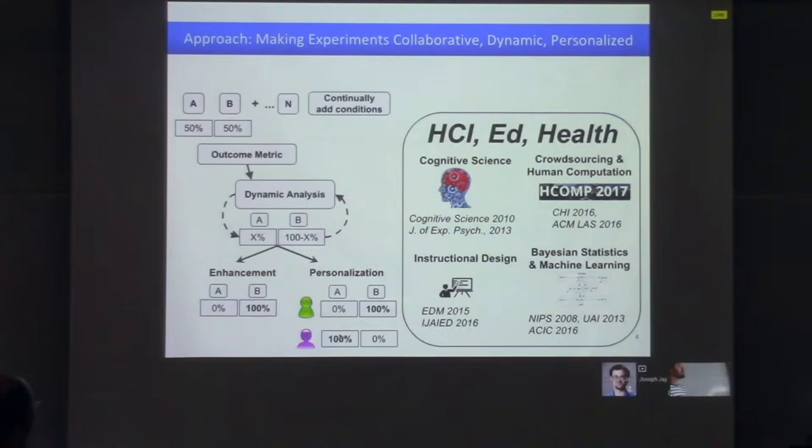Something's missing though. If it was really intelligent, it would add new actions. We want to keep adding new conditions while running a study. This is where I draw on crowdsourcing and human computation—bringing humans into the loop with RL to keep adding new actions.